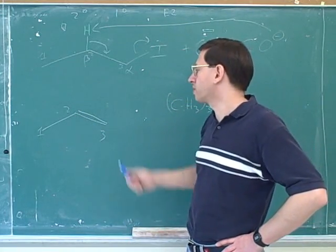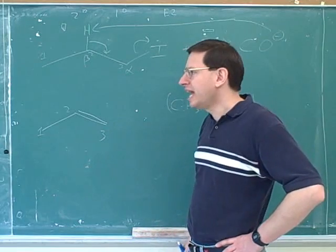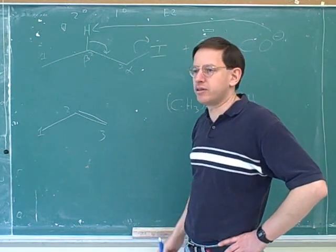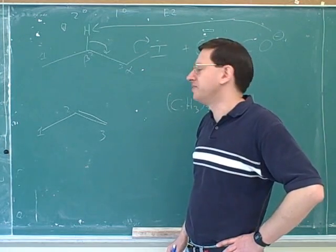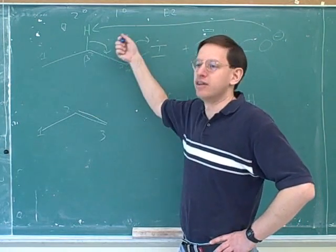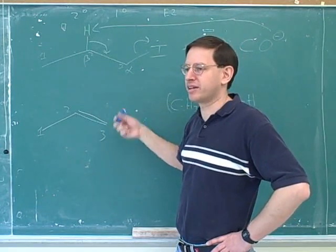Because as the class goes on, you're going to get more and more complicated products. And students get worse and worse at drawing those complicated products. But actually, all of them should be equally easy. They should all be equally easy if you just go one atom at a time and do what the arrows tell you. It doesn't matter how complicated the product is.